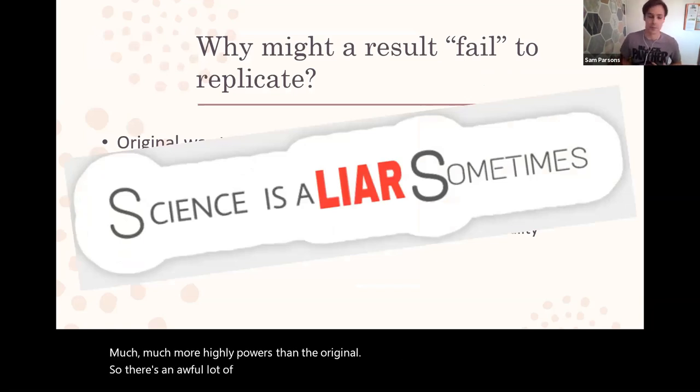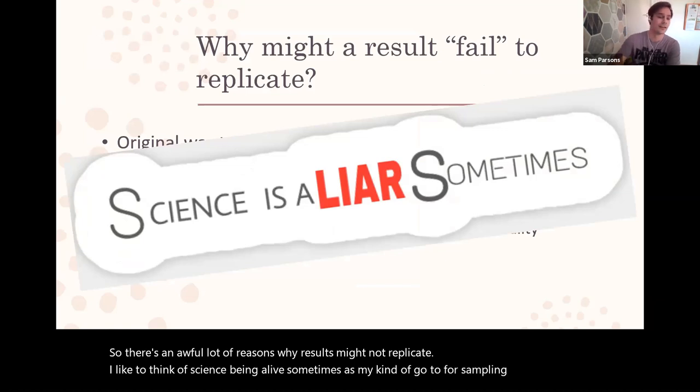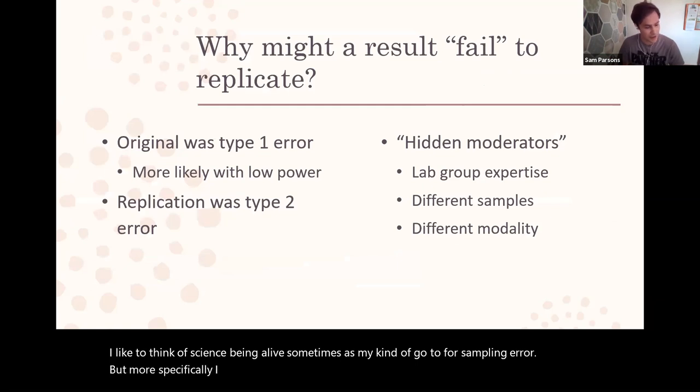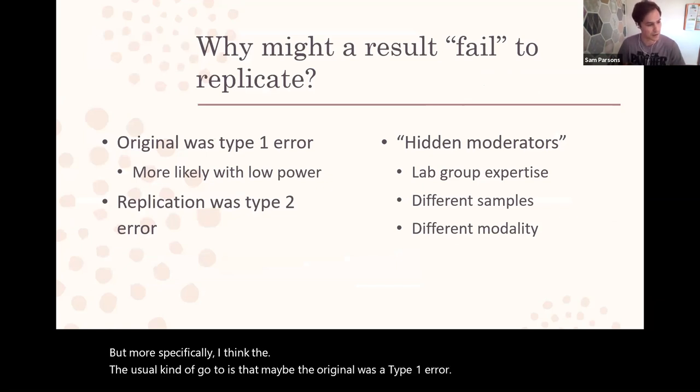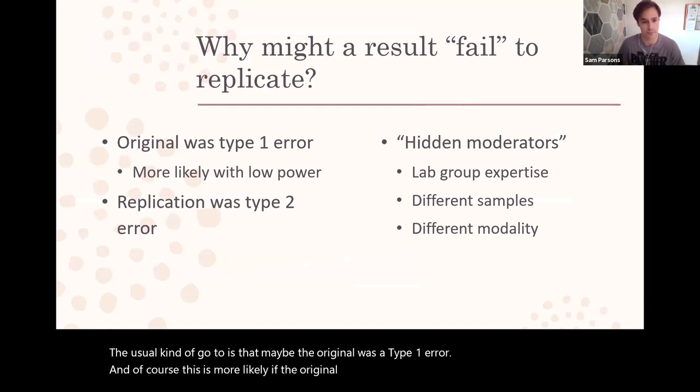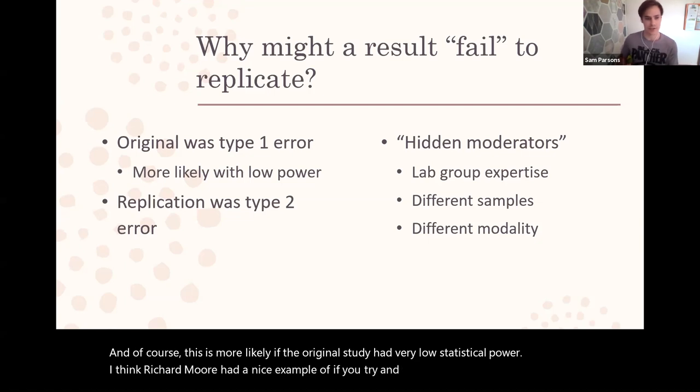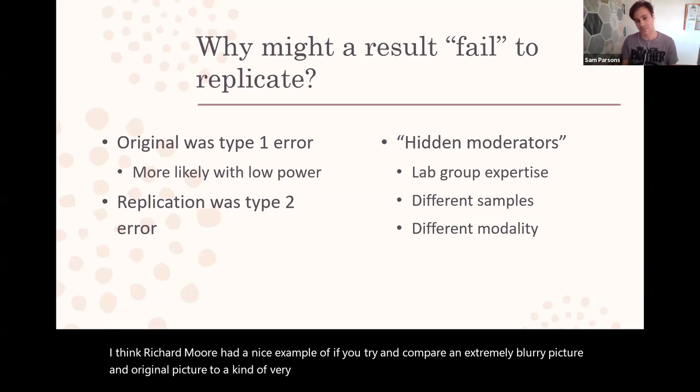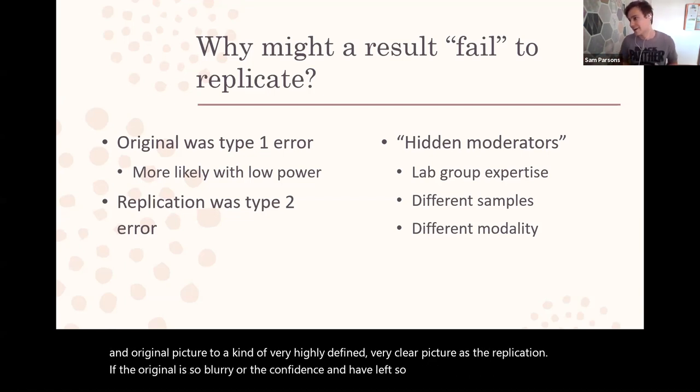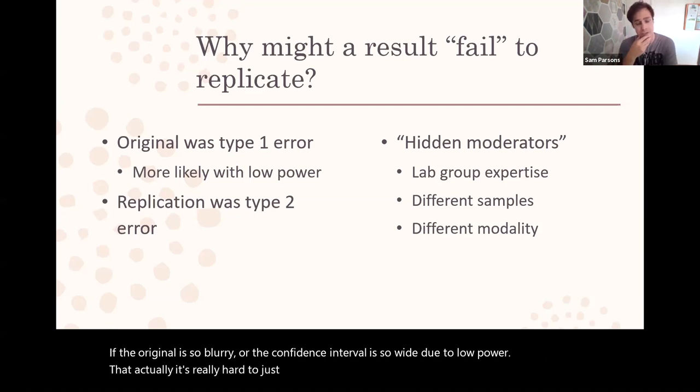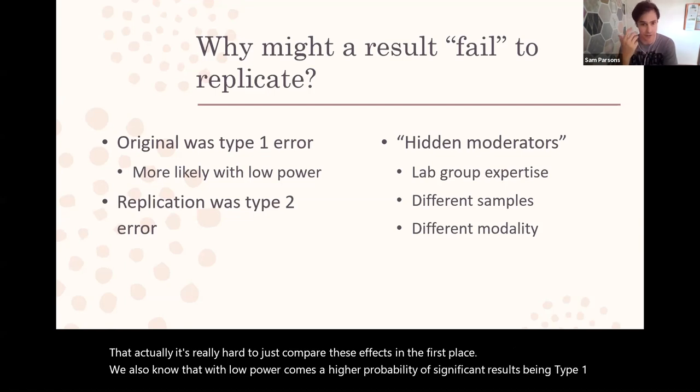There's several issues with the paper in the sense that a one-shot replication attempt might not actually be giving us a full picture of how replicable that particular effect is because essentially we have two observations, albeit most of the replication attempts were much more highly powered than the original. There's an awful lot of reasons why results might not replicate. I like to think of science being a liar sometimes as my go-to for sampling error, but more specifically the usual go-to is that maybe the original's a type one error. Of course this is more likely if the original study had very low statistical power.